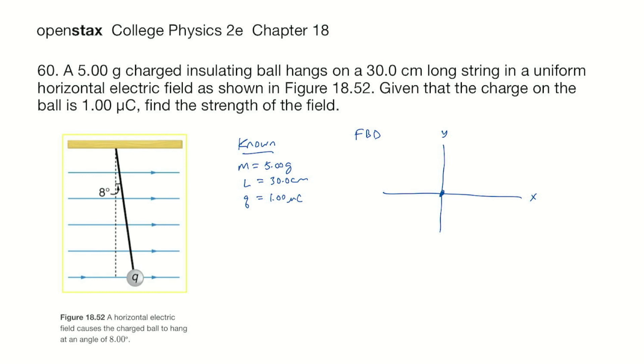This is a positive charge so the electric force is in the same direction as the electric field, so we'll put this as F sub e. This is a ball so it has a weight that is straight down, and then it's attached to a string so it has a tension.